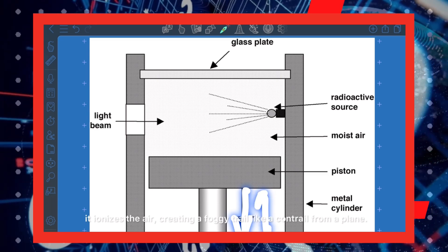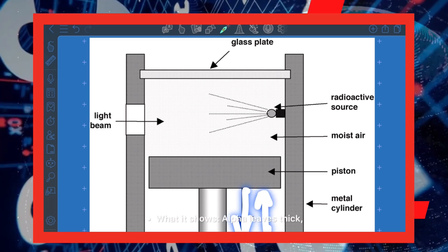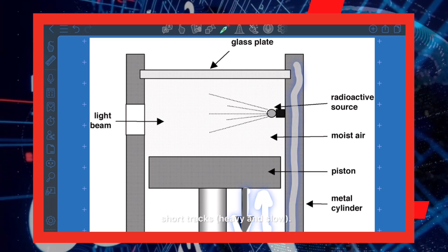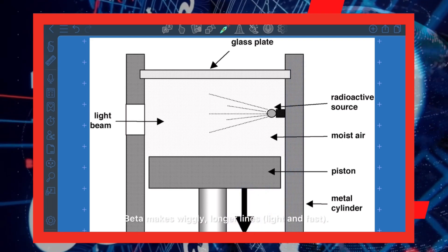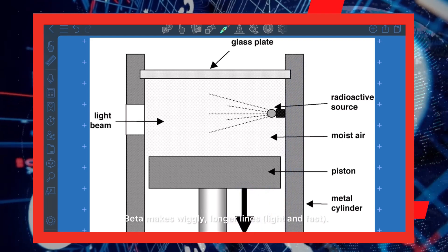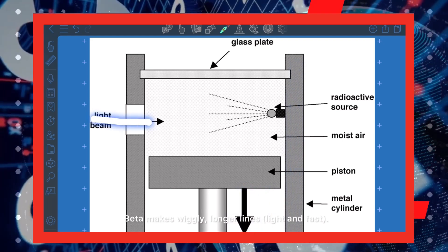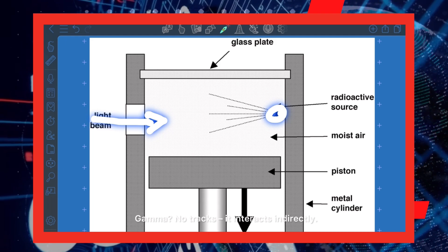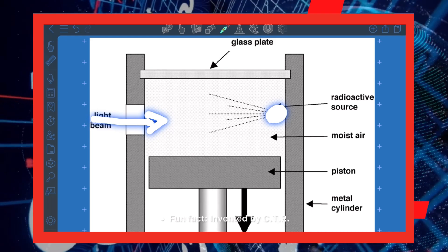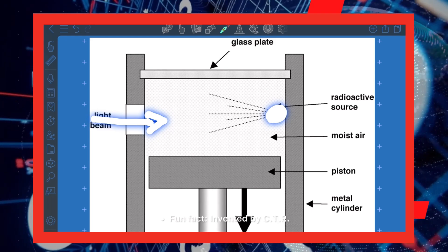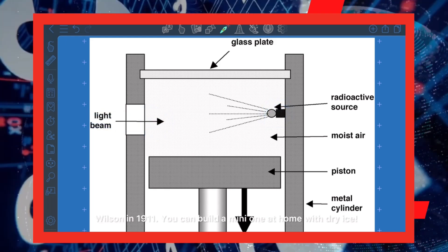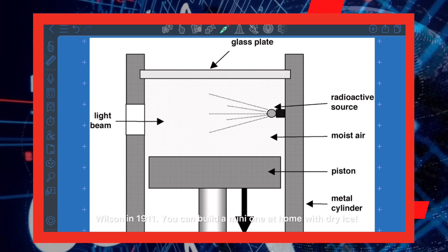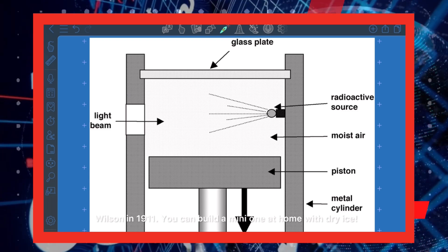The cloud chamber trail is like a contrail from a plane. Alpha leaves thick, short tracks — heavy and slow. Beta makes wiggly, longer lines — light and fast. Gamma leaves no visible tracks as it interacts only indirectly. Fun fact: it was invented by C.T.R. Wilson in 1911, and you can build a mini one at home with dry ice.